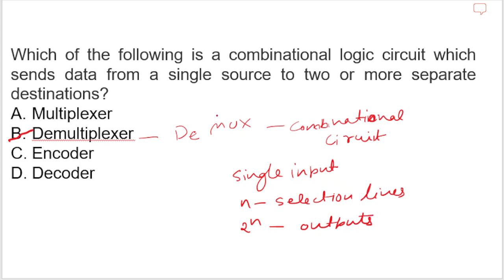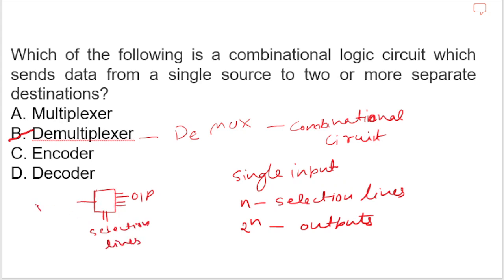For example, if there is 1 selection line then the output will be 2. If there are 2 selection lines then the output will be 4. If there are 3 selection lines then the output will be 8.